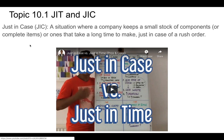Just-in-case manufacturing is basically the opposite of just-in-time. In this case, you want to stock up on the components and raw materials that you need to produce your product. It has its own advantages and disadvantages, which we'll discuss in the next slide.